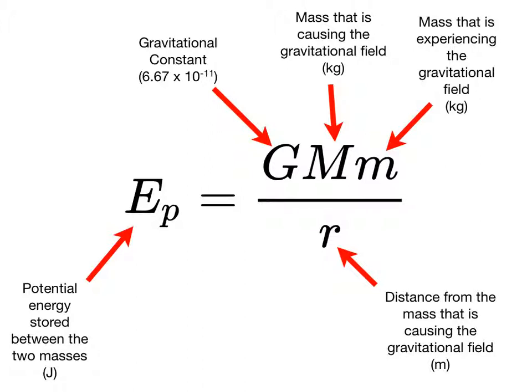This equation allows us to calculate the gravitational potential energy stored by two masses a distance r apart. So big G here is, of course, Newton's gravitational constant that we've used before.